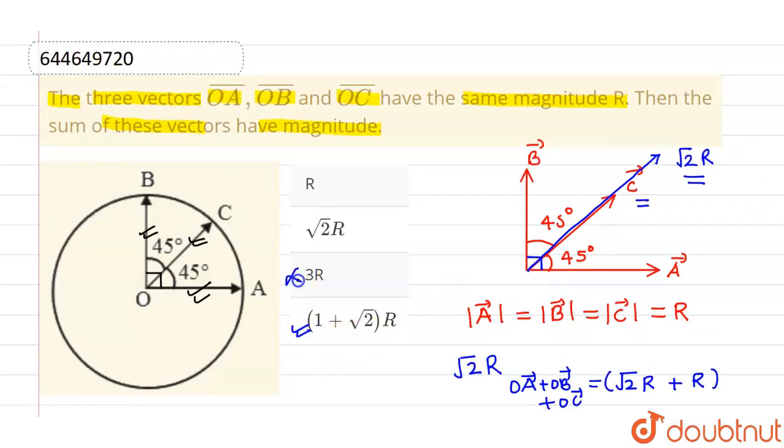So root 2 plus 1 times R is the correct option, and all other options are incorrect. I hope you understood. Thank you.